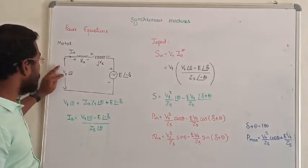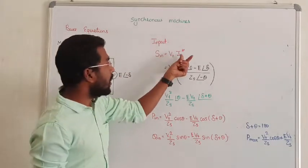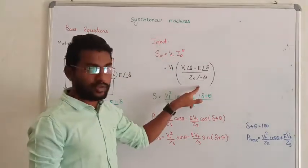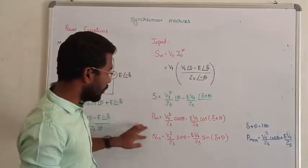So motor input output is VT at the time into IA conjugate. Again, IA value added to the conjugate substitute. All of them multiplied by real power and reactive power.